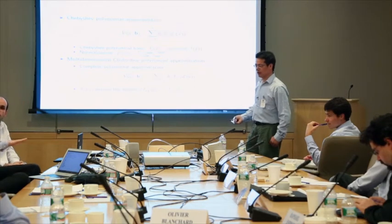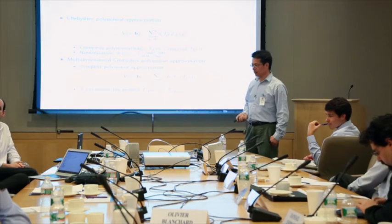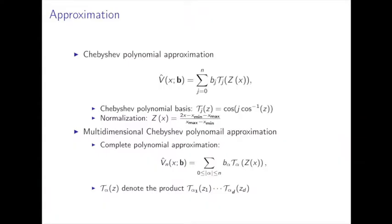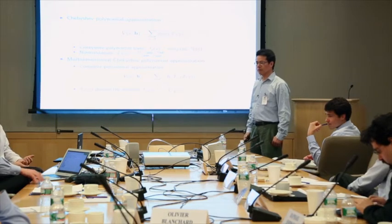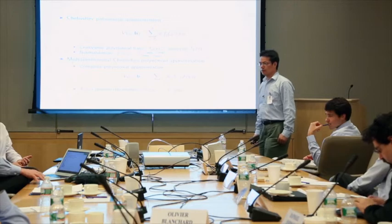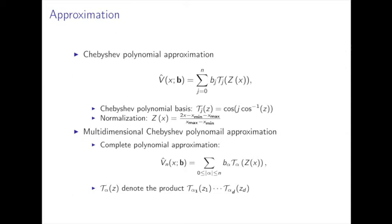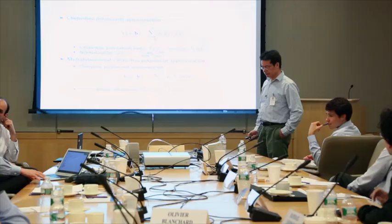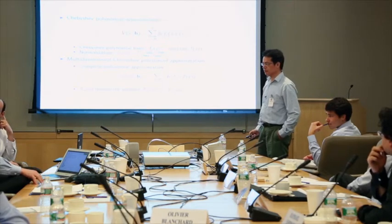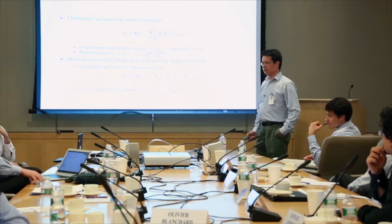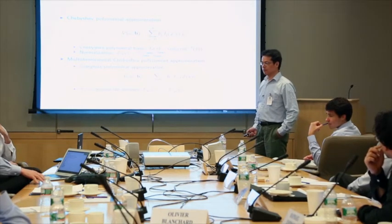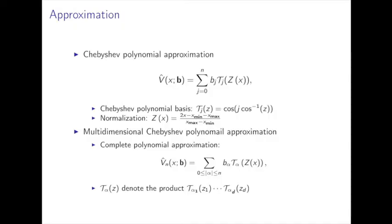If you have a function with bounded behavior for cross-partials, you can get good global approximations without exponential complexity. The curse of dimensionality is related to smoothness: C0 functions have the curse of dimensionality, but C2 and above do not. This is also related to reproducing kernel Hilbert spaces, which is a broader framework being studied in recent papers.